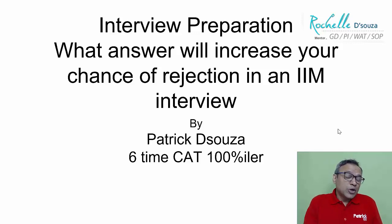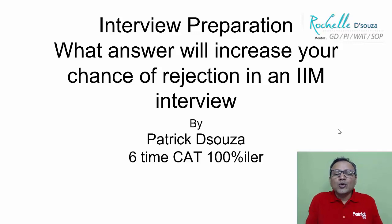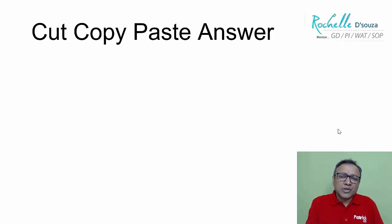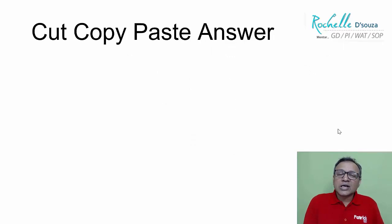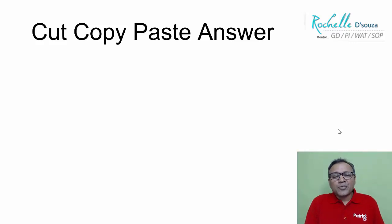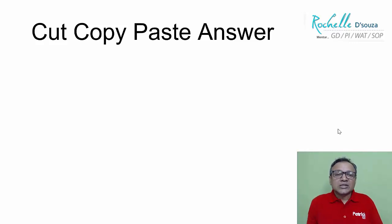What answers can you give which unknowingly increase the chance of rejection? Let's look at the answers that normally cause rejection — the cut, copy, paste answer. What do you mean by cut, copy, paste answer? What happens is we normally look out for standard answers, so we look for answers on the net.